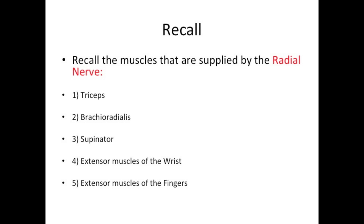The first would be the triceps, second would be the brachioradialis, the third would be the supinator, the fourth would be the extensor muscles of the wrist, and the fifth would be the extensor muscles of the fingers. So these five things come to mind — don't forget to examine them.